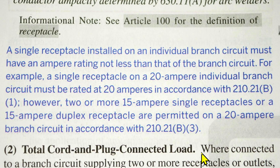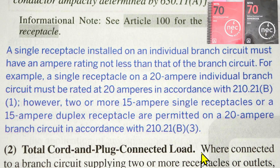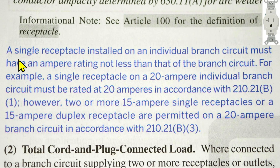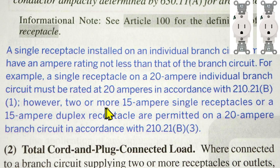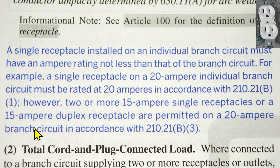A duplex receptacle is an example of a multiple receptacle that has two receptacles on the same yoke or strap. On your left is a 20 amp single receptacle and on your right is a 20 amp multi-receptacle, more specifically called a duplex receptacle. This explanation in blue is from the 2023 NEC handbook, which adds explanations, photographs, and drawings to help you understand the codes. A single receptacle on a 20 ampere individual branch circuit must be rated at 20 amperes per 210.21(b)(1). However, two or more 15 amp single receptacles or a 15 ampere duplex receptacle are permitted on a 20 ampere branch circuit per 210.21(b)(3).